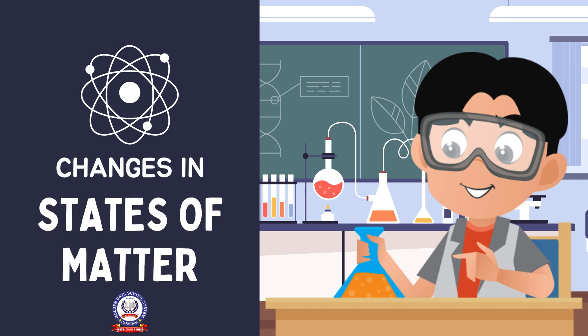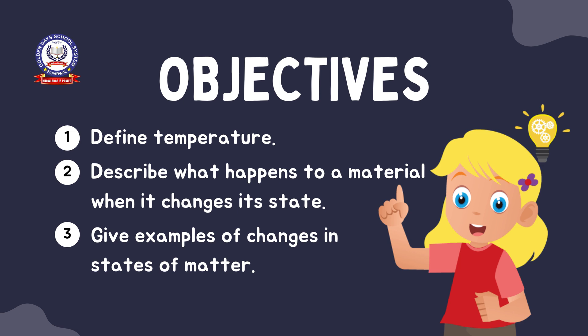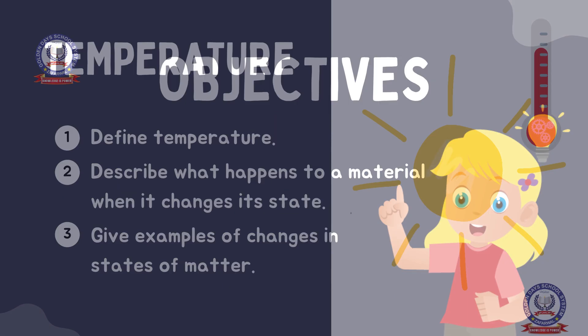Changes in States of Matter. Objectives: Define temperature. Describe what happens to a material when it changes its state. Give examples of changes in states of matter.